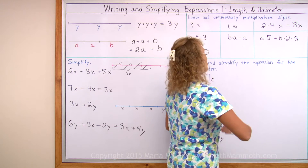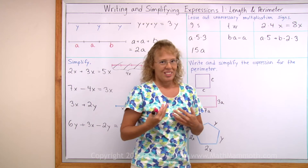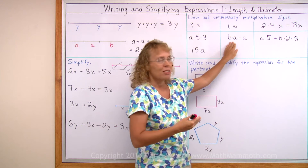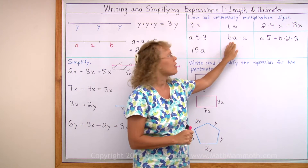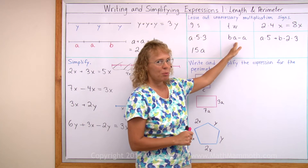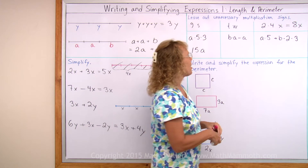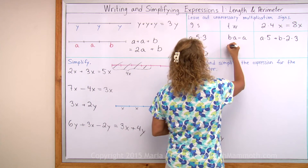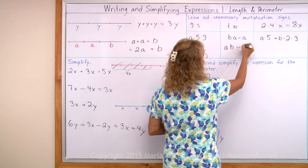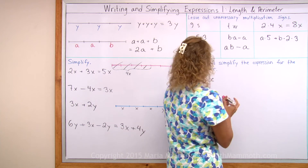b times a minus a. Another customary thing is to write variables in alphabetical order. So instead of b times a, write it as a times b. We don't need the multiplication sign there, so it becomes ab minus a. It cannot be simplified any further.